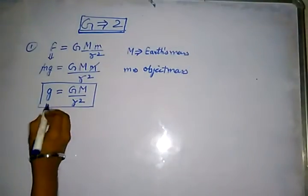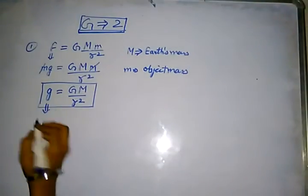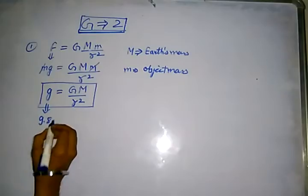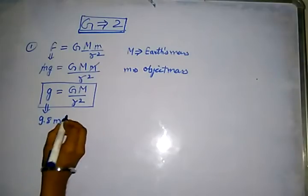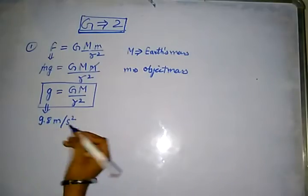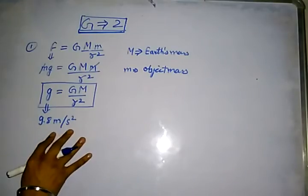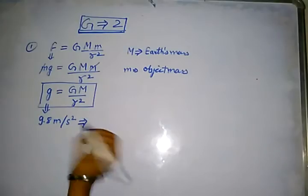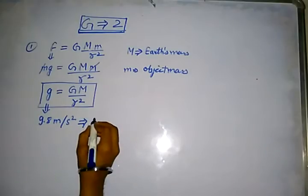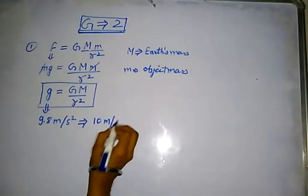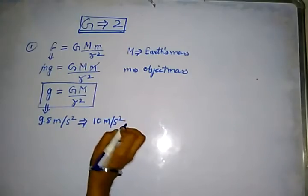This gravitational acceleration g is approximately constant at 9.8 meters per second squared, and for ease of calculation we can take it as 10 meters per second squared.